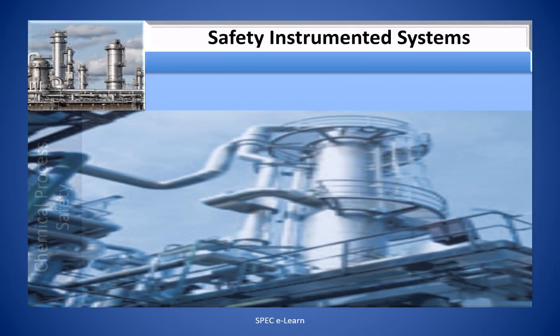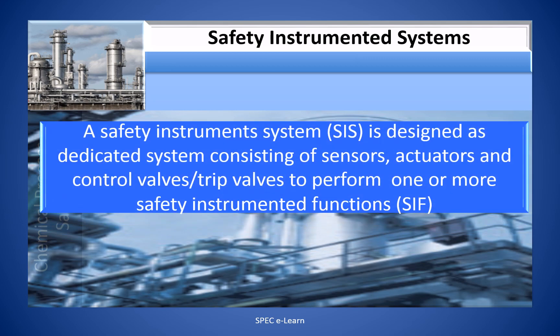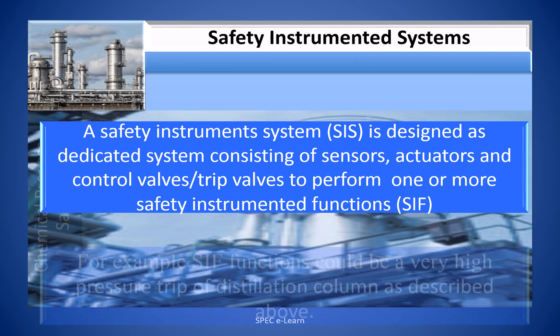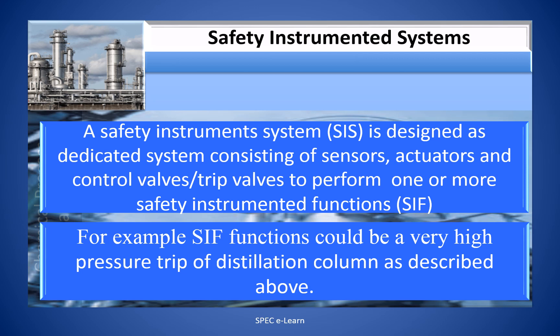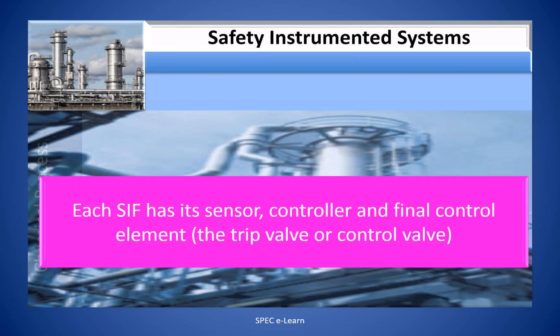A Safety Instrumented System is a dedicated system consisting of sensors, actuators, and control valves or TRIP valves to perform one or more Safety Instrumented Functions. For example, a SIF could be a very high pressure TRIP-off on a distillation column as described above. Each SIF has its own sensor, controller, and final control element, including a TRIP valve or a control valve.